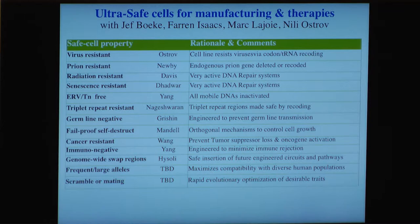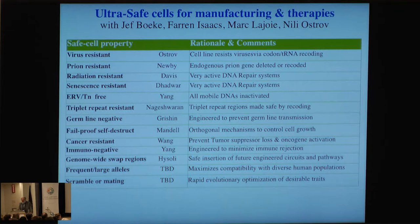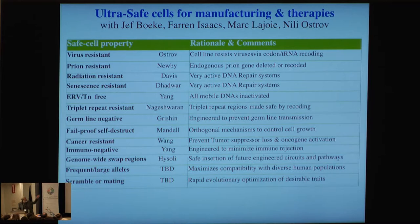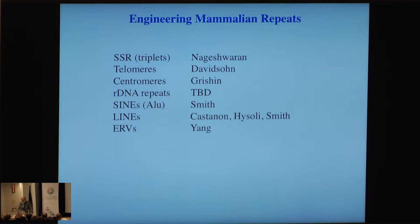Nilly Ostra will be giving a presentation on virus resistance. For triplet repeats, we want to be germline-negative but pluripotent. We want fail-proof self-destruction, which we've already demonstrated using non-standard amino acids in E. coli, and we want to transfer this to mammalian cells. Also: cancer resistant, immune negative, genome swap regimes, and so on. We are engineering mammalian repeats — simple sequence repeats, telomeres, centromeres, ribosomal DNA, Alus, LINEs, and endogenous retroviruses. We've already knocked out 62 endogenous retroviruses, which has emboldened us to take on all these other categories of repeats, some of which we haven't even fully sequenced yet.